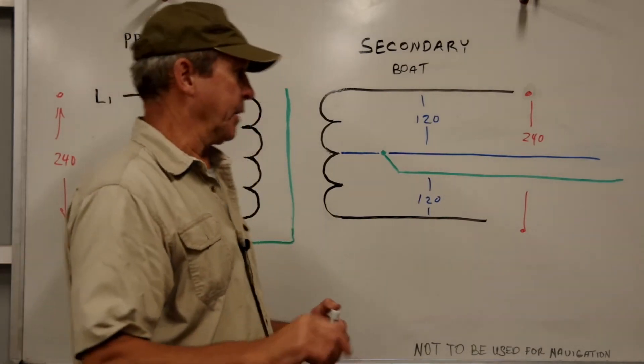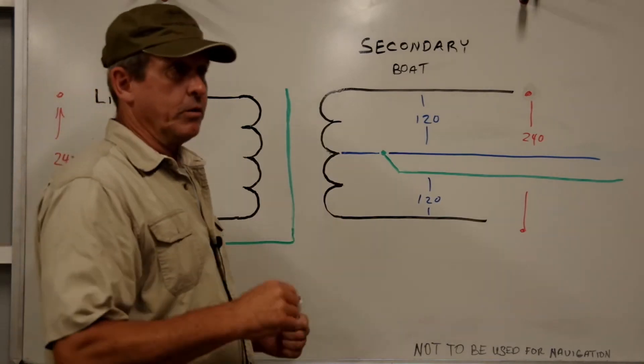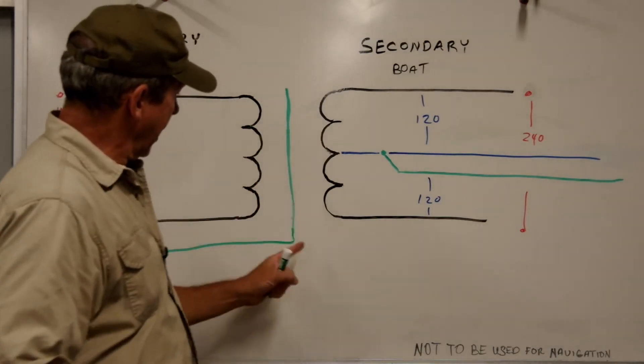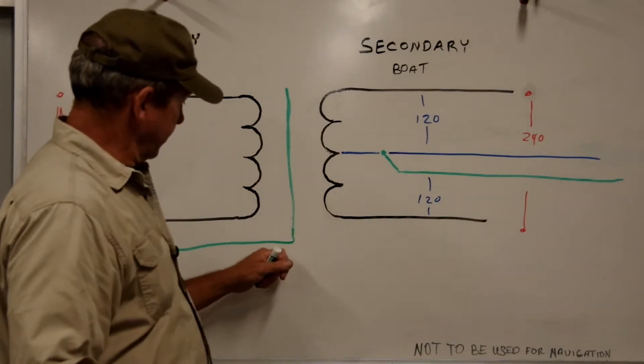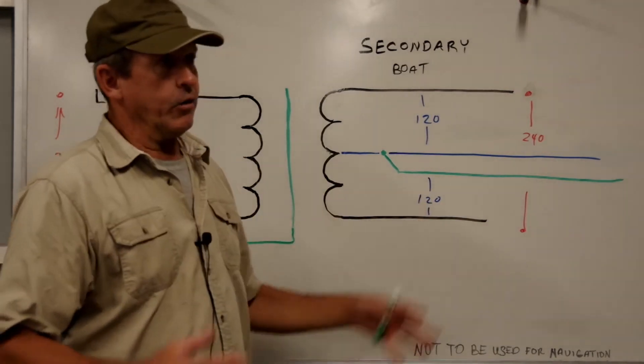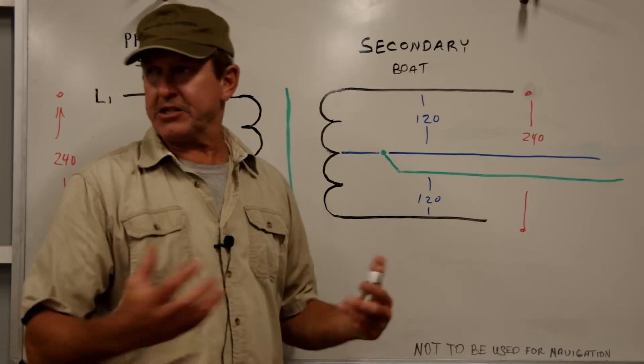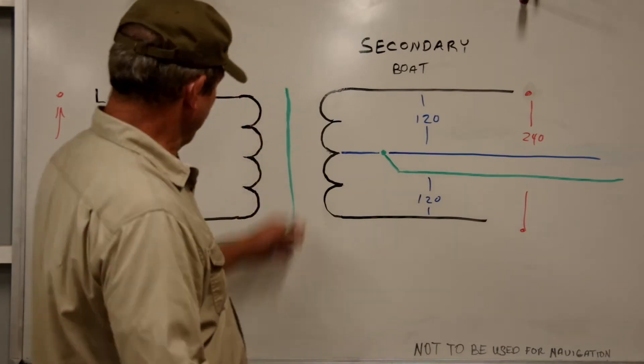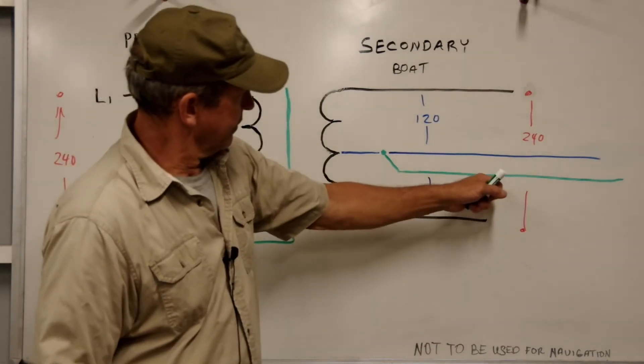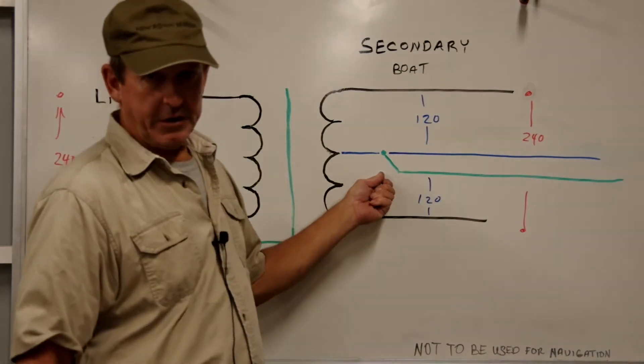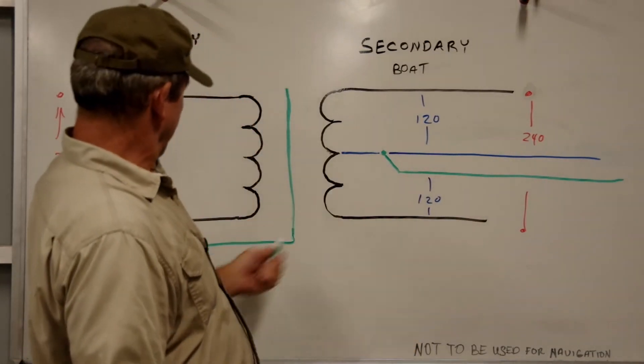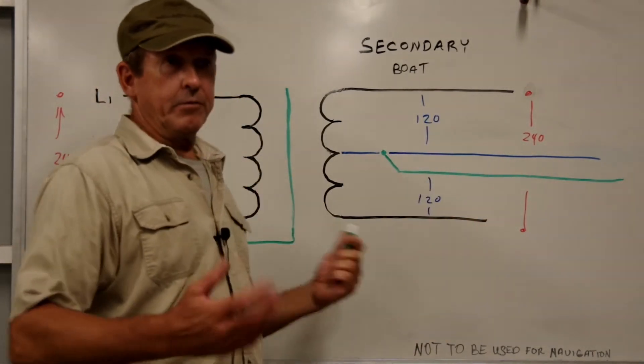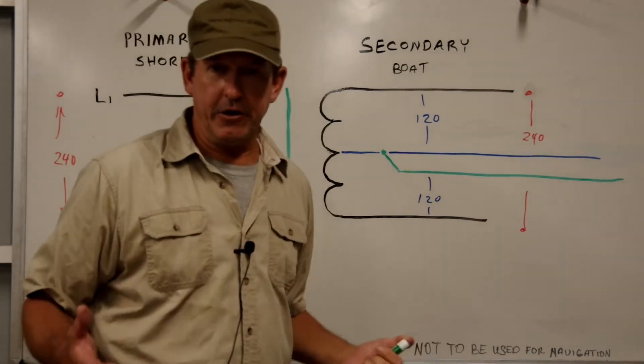Also, when we were talking about the galvanic isolator video, we discussed how when you plug your shore cord in through your AC safety ground, your boat's bonding system, your cathodic protection, is being shared across the marina. If there's a problem somewhere, your boat could suffer from that. So by bringing our AC safety ground to the secondary side of the transformer, we've eliminated that connection. Now our AC safety ground is not connected to the dock, and we can't possibly be sharing our anodes or zincs with the rest of the marina.